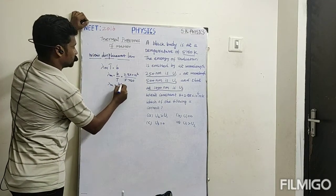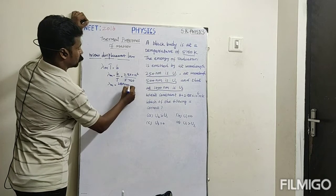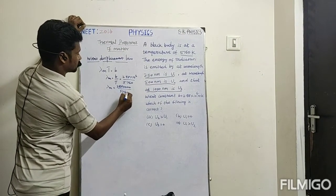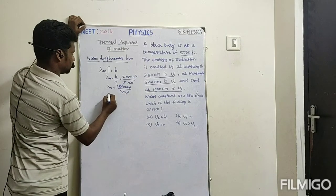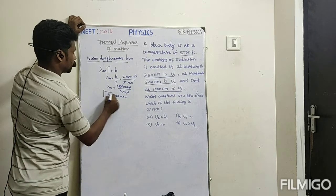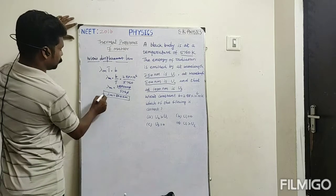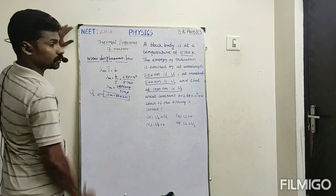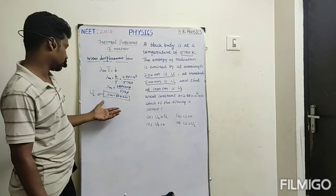Simplifying: 288 divided by 5760 — after cancellation we get λm = 500 nanometer. So the wavelength of maximum energy corresponds to 500 nanometer, which is U2 in the question.